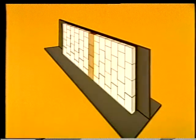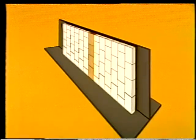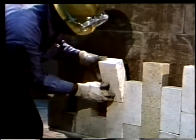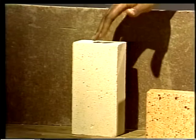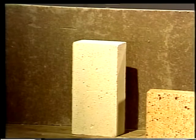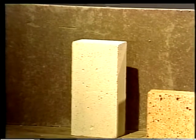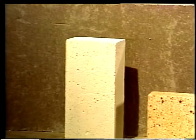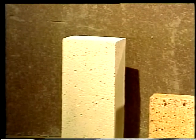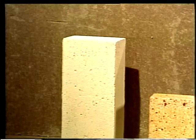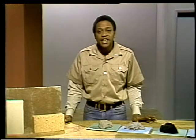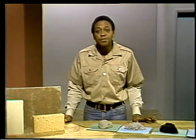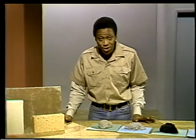Insulating brick is the next refractory layer inside the insulating block. Like insulating block, insulating brick is laid dry without mortar, but it's smaller than insulating block. Insulating brick is also made of diatomaceous earth, but often the diatomaceous earth is heat-treated to improve the insulating brick's resistance to high temperatures. This heat treatment is called calcination.